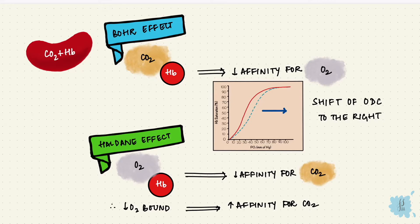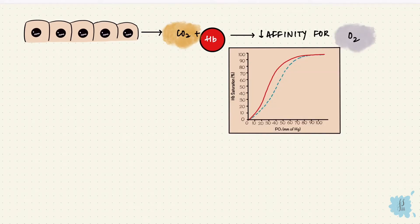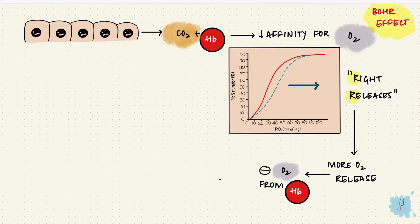So let's see how these work together. The tissue produces carbon dioxide that binds to hemoglobin, reducing the affinity for oxygen and shifting the oxygen dissociation curve to the right. So more oxygen is released to the tissues. That was the Bohr effect. Now the removal of oxygen from hemoglobin increases hemoglobin's affinity for carbon dioxide for the carbon dioxide that the tissues have produced.